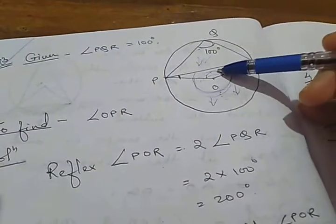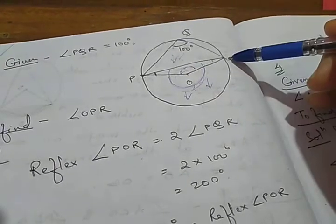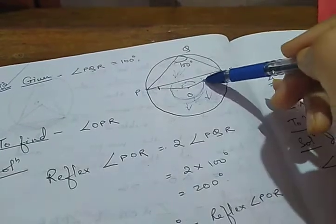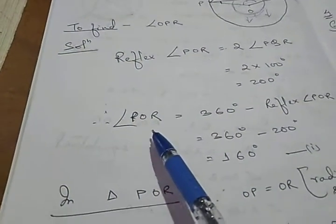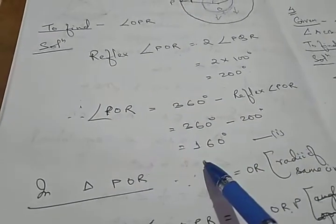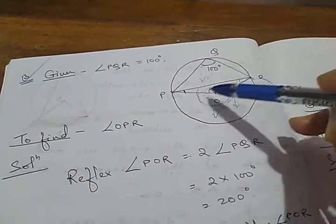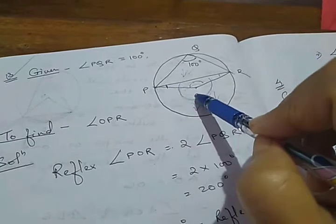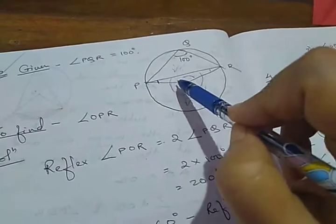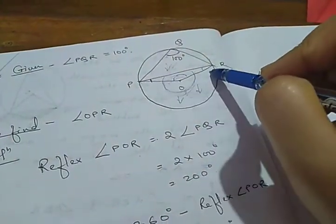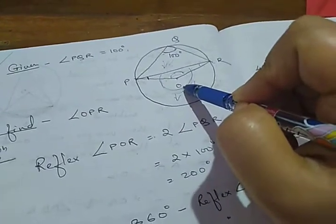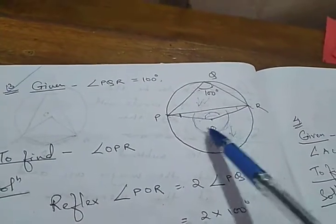Now, we need to find the interior angle POR. Since the complete angle is 360 degrees, angle POR equals 360 degrees minus reflex angle POR, giving us 360 minus 200 equals 160 degrees. Now, in triangle OPR, OP and OR are radii of the same circle, so they are equal in length. By the theorem that angles opposite equal sides are equal, angle OPR equals angle ORP.